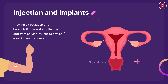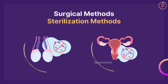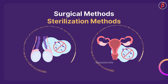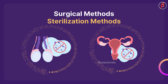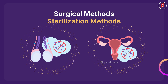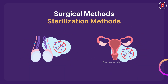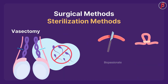Injections and implants inhibit ovulation and implantation, and alter the quality of cervical mucus to prevent or retard entry of sperms. Surgical methods, or sterilization methods, are generally advised for the male or female partner as a terminal method to prevent any further pregnancies. Surgical intervention blocks gamete transport and thereby prevents conception.